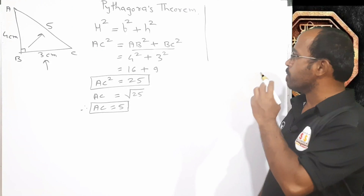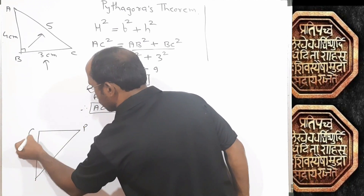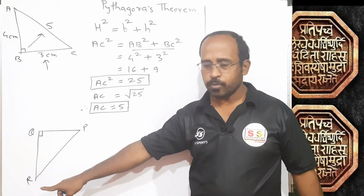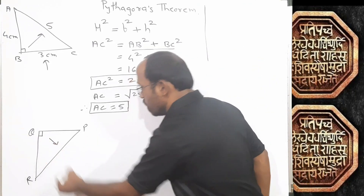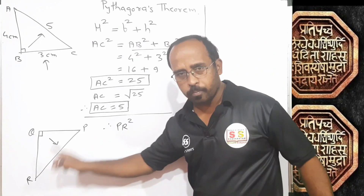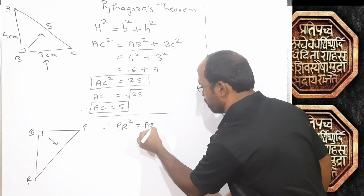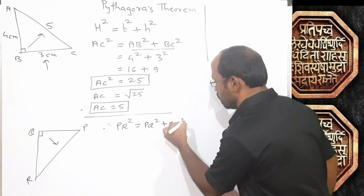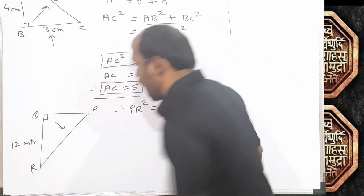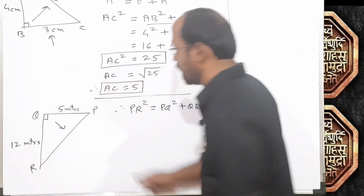Similarly, let's see one more example to make it more clear. Suppose one more right angle triangle is there. The name of the triangle is PQR and Q is the 90 degree angle. So which side is the hypotenuse? Hypotenuse is PR. Consider that length of QR is 12 meters and length of PQ is 5 meters. Then how much will be the length of PR?